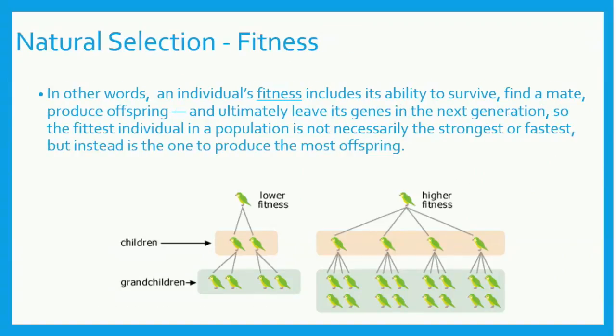Let's add another vocabulary word: fitness. Fitness is the ability to survive, find a mate, and produce offspring. The parents pass their genes on to their offspring, therefore also passing on the advantageous trait. When we think of the fittest individual, we usually think of the strongest or fastest, but for this definition, the fittest individual is the one that produces the most offspring.